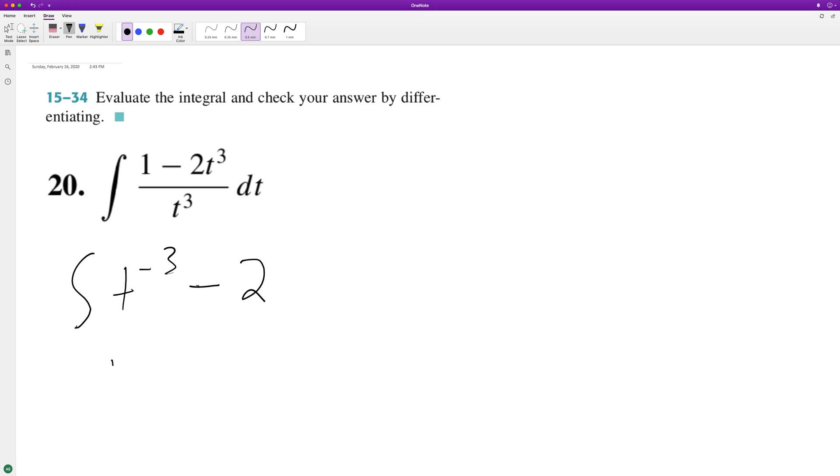So if we integrate this whole thing, we'll have t raised to negative 3, add 1 to it, and then we just add t. So we end up with t raised to the negative 2 over negative 2.